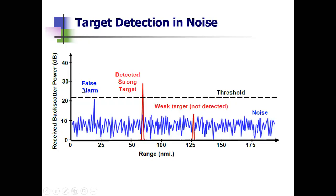This graph shows what we covered in minimum detectable signal. We set a threshold, and based on that threshold we determine which is an actual detected target, which is a false alarm, and which is a missed target. The actual signal is shown in red. When the signal is above the threshold, we detect it. Weak signals below the threshold will not be detected - this is called misdetection. If the threshold is placed too low, noise signals may exceed it, causing a false alarm.